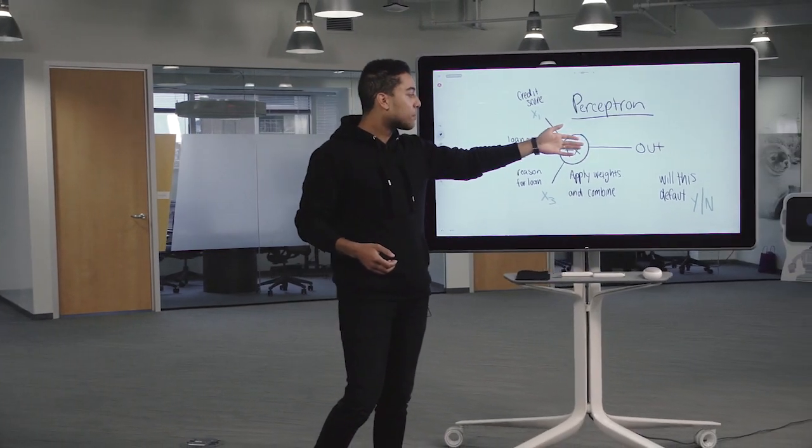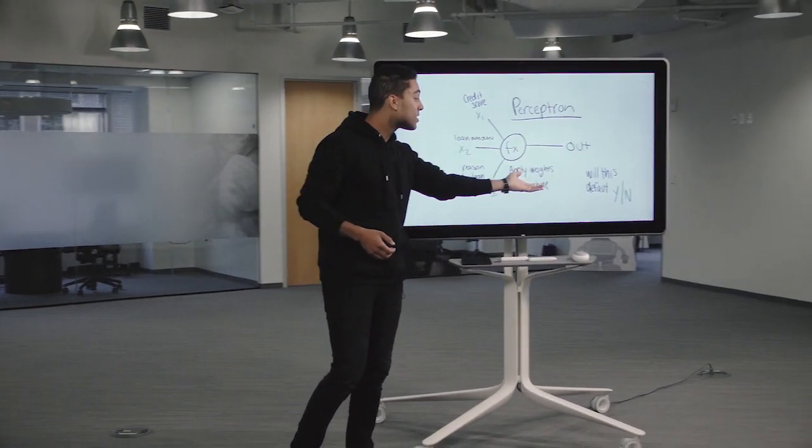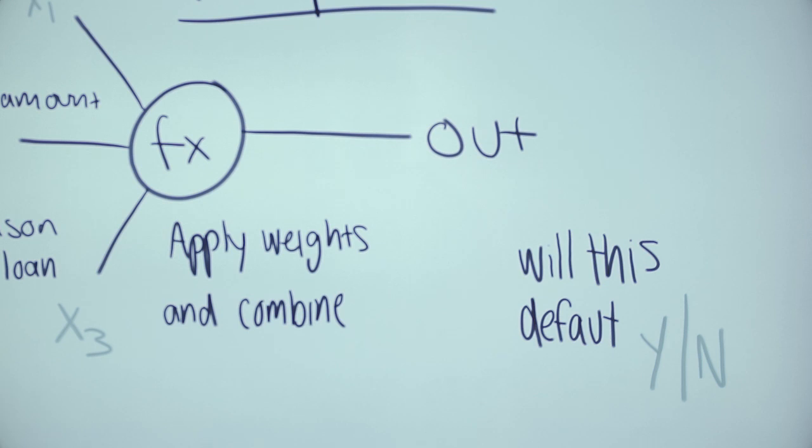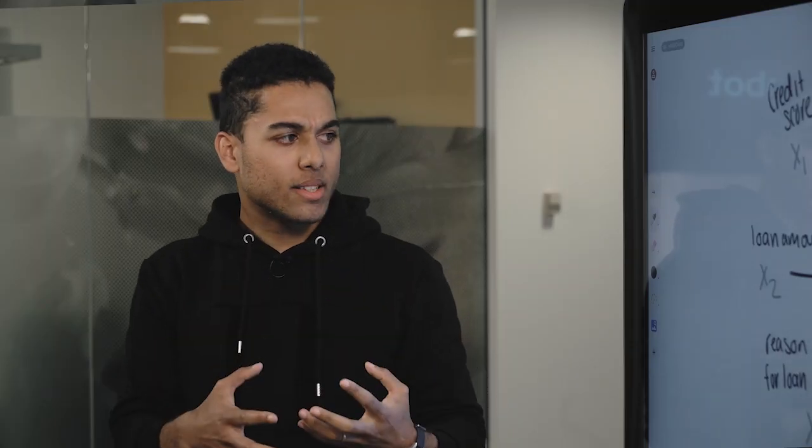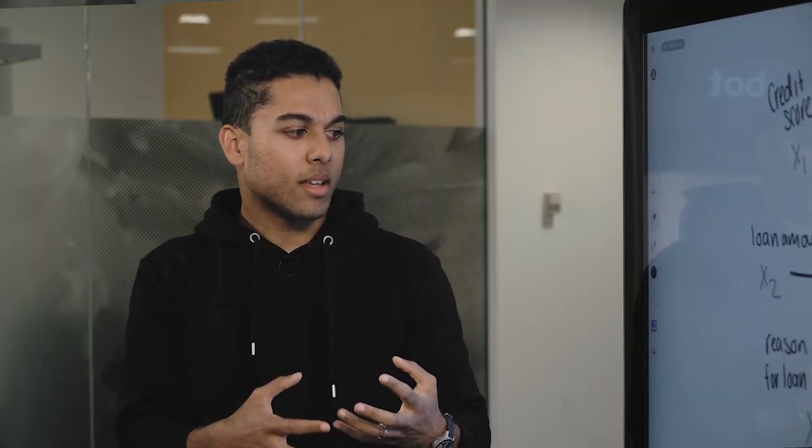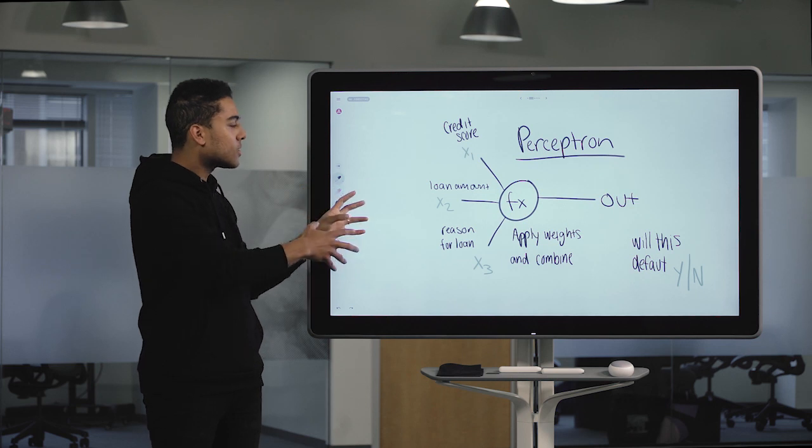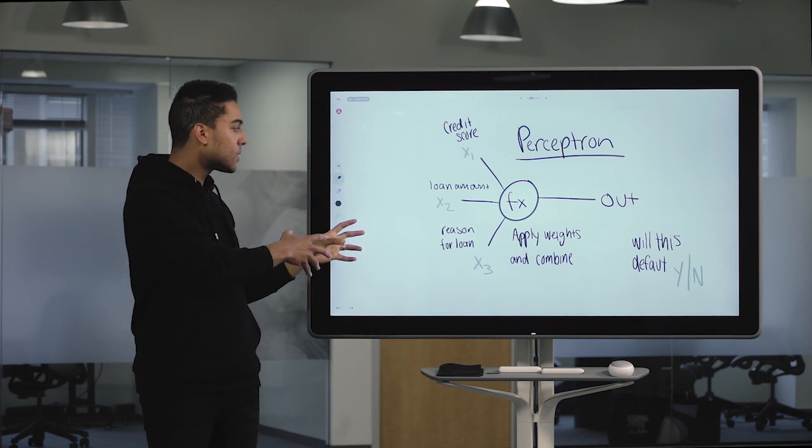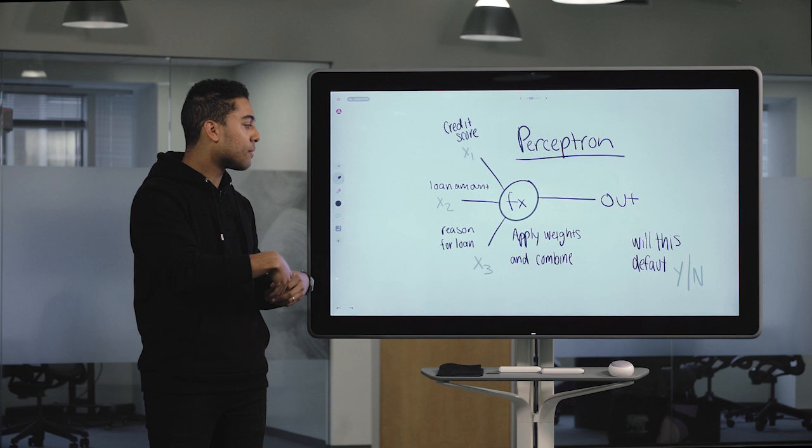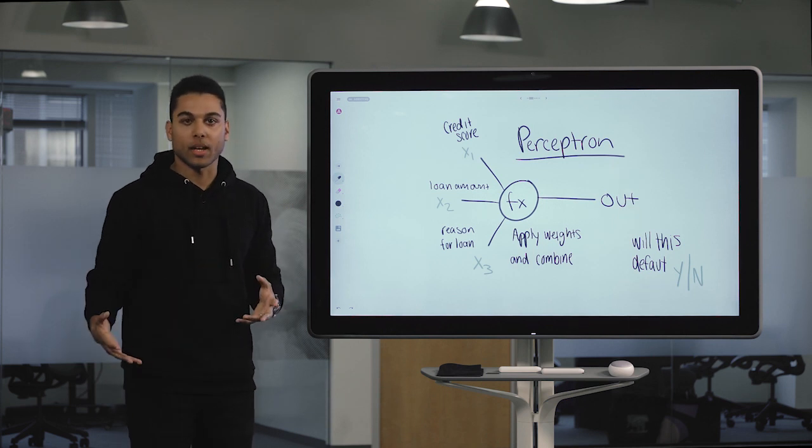In this case, the output that we want is will this default, yes or no? We need to learn how to apply weights to this in such a way that we can figure out which of these is important and in what quantities, and then combine all of that information into a final answer.